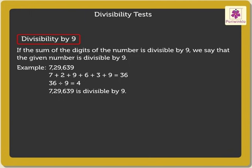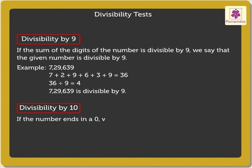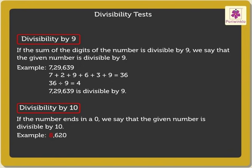Finally, let us look at divisibility by 10. If the number ends in 0, we say that the given number is divisible by 10. For example, 8,620 ends in 0. Thus, it is divisible by 10.